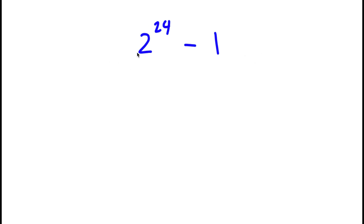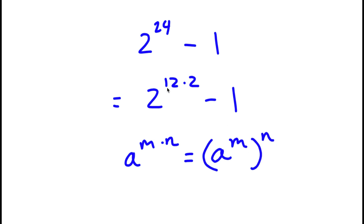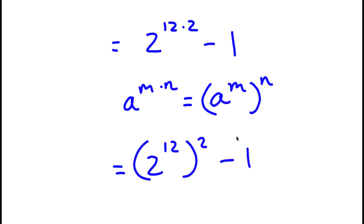Now 2 to the power of 24 — this is the same thing as 2 to the power of 12 times 2, minus 1. And if I have something in the form a to the power of m times n, this equals a to the power of m, to the power of n. So 2 to the power of 12 times 2 is the same as 2 to the power of 12, squared, minus 1.